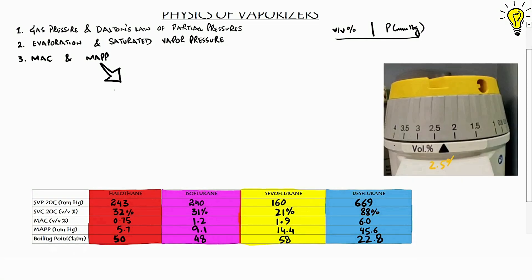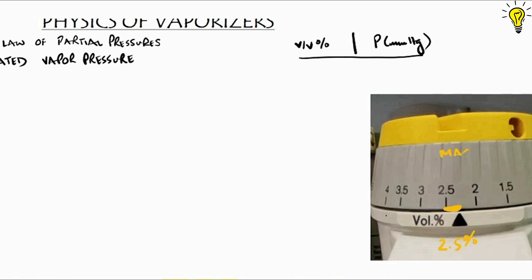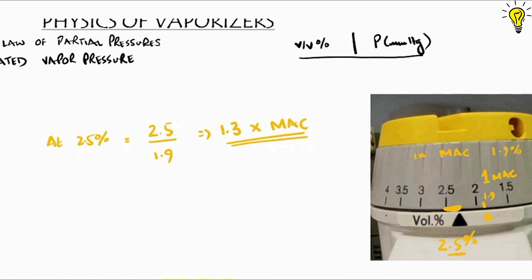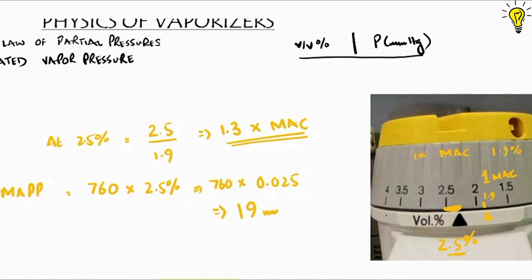Here in the picture, I have set the vaporizer dial at 2.5%. In terms of MAC value, divide 2.5% by 1.9% for sevoflurane — and this 1 MAC value for other gases is different, as you can see in the table; for isoflurane it is 1.2%. So 2.5% ÷ 1.9% = 1.3 MAC. 1 MAC prevents movement in 50% of patients; 1.3 MAC prevents it in 95%. In terms of minimum alveolar partial pressure at sea level: 760 × 2.5% = around 19 mmHg is the partial pressure of sevoflurane in the alveolus at this vaporizer setting.